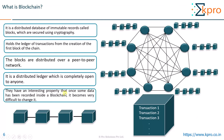They have an interesting property that once some data has been recorded inside a blockchain, it becomes very difficult to change it. This is what is meant by immutable records. Once a transaction is recorded in a block in this blockchain, it is next to impossible to change it — how we cannot change it we'll see in the later slides. So this is what is meant by blockchain.